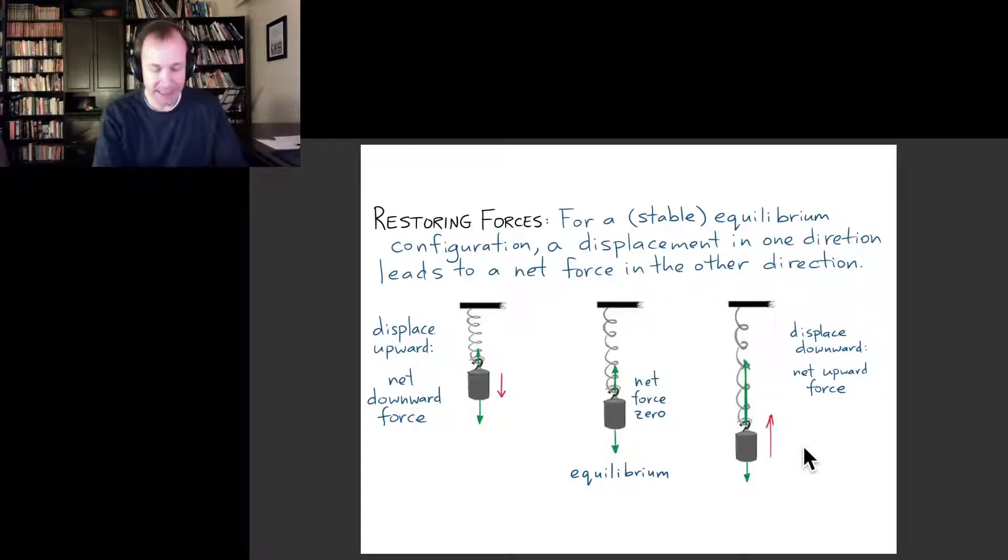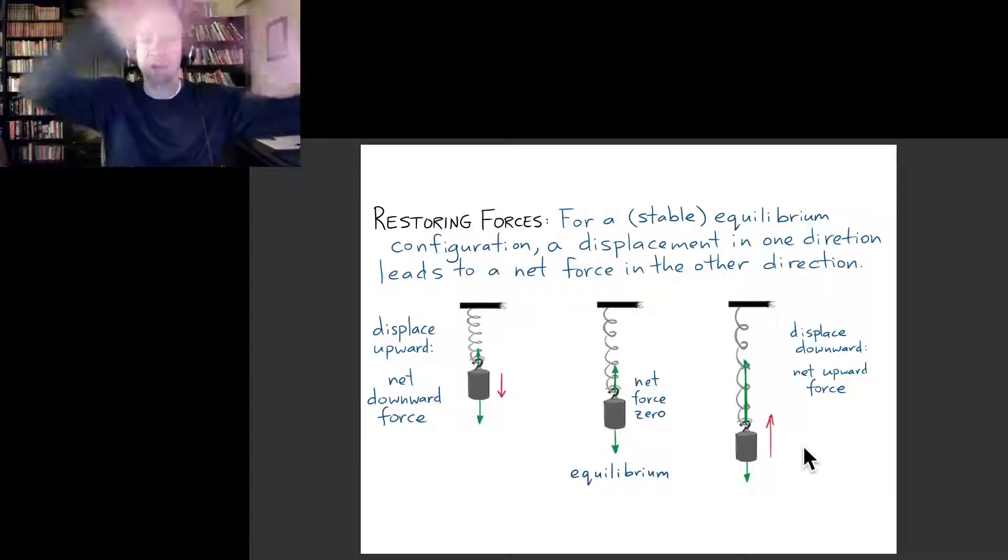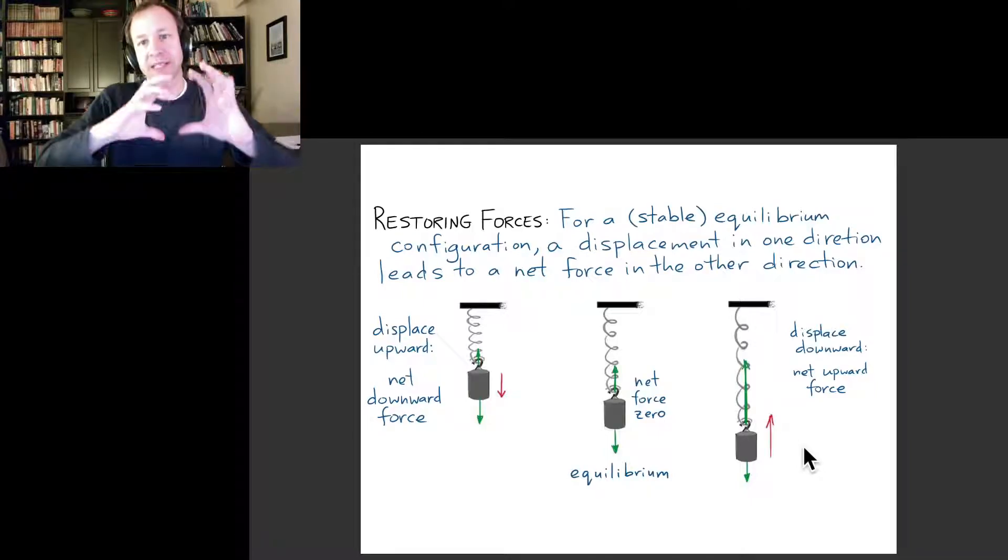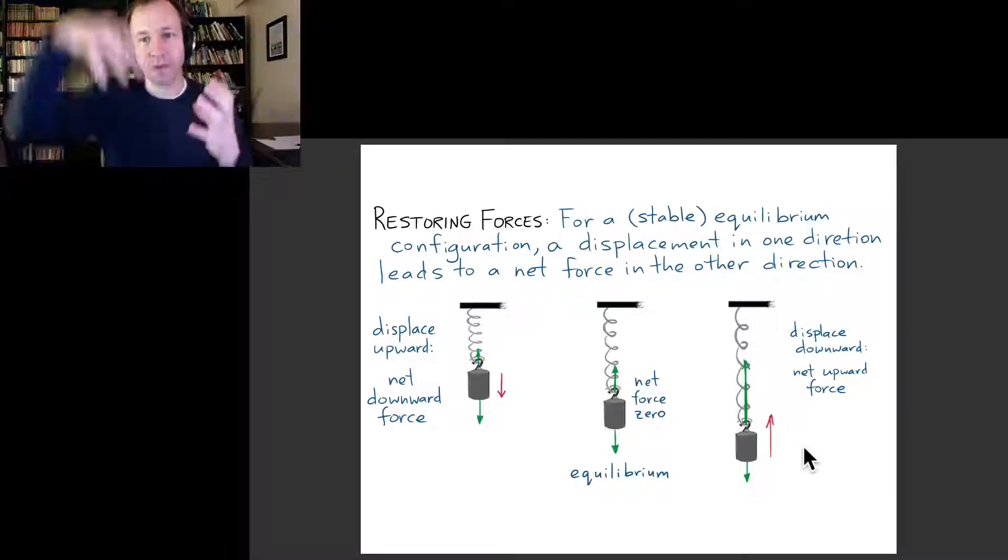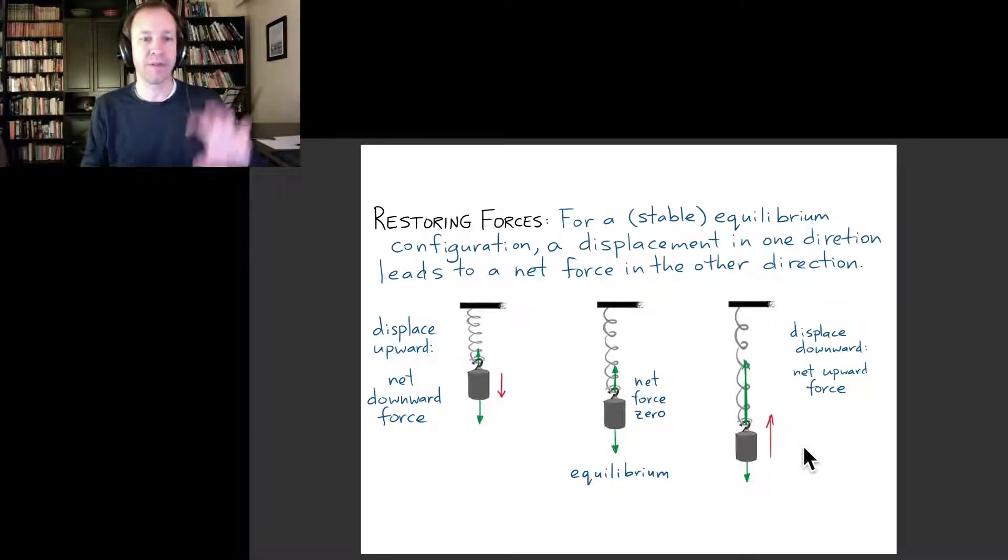That leads to a really important idea that applies not just to masses on springs, but to almost any system in stable mechanical equilibrium, meaning if you press something it won't go flying off. If we displace it in one direction, there tends to be a net force in the other direction that tries to bring it back to the original equilibrium position. These kinds of forces with this property are known as restoring forces.